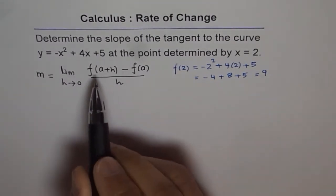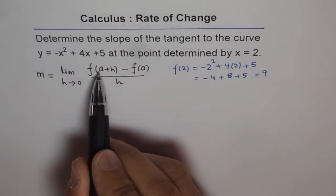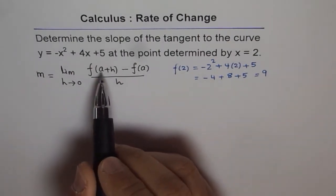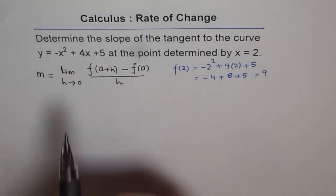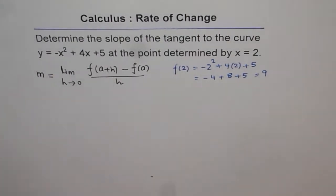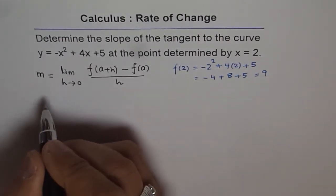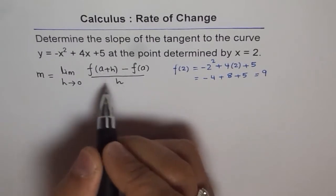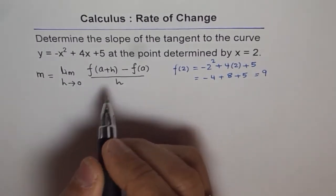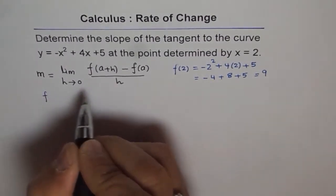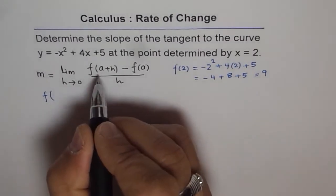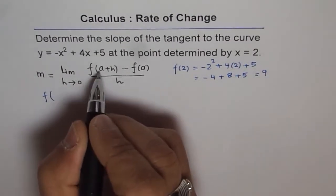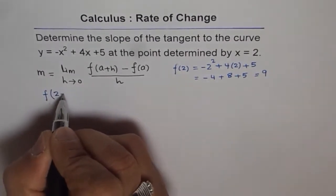Now what is f(a+h)? To find a+h, we need to replace all the x's with a+h. Since a is 2, I will replace a with 2 and write 2+h.